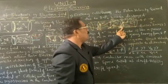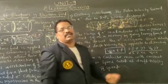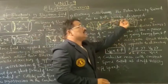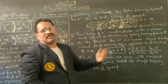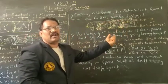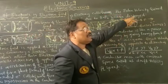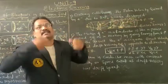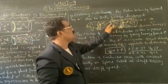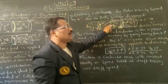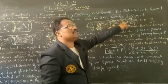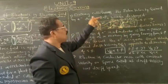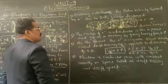Each electron, as it moves in the specified direction, collides with some acceleration, hits the lattice region or free electrons, and gets stopped for a short time interval. Again, by means of the external electric field, the electron gains energy and velocity, tries to move forward, collides again — and so continuously the electron is accelerating and decelerating, moving in a forward direction.